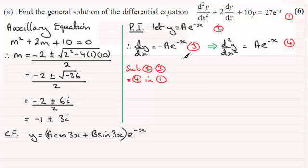And doing that gives us, for d2y dx squared, we've got ae to the minus x, so ae to the power minus x. And then we've got 2 lots of dy by dx, so that's going to be minus 2a e to the power minus x. Then we've got 10y, so that's going to be plus 10a e to the power minus x. And that's going to be equal to the 27e to the power minus x.